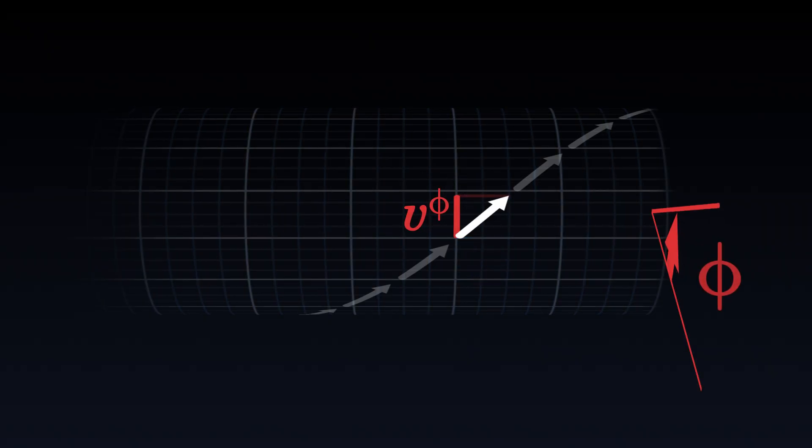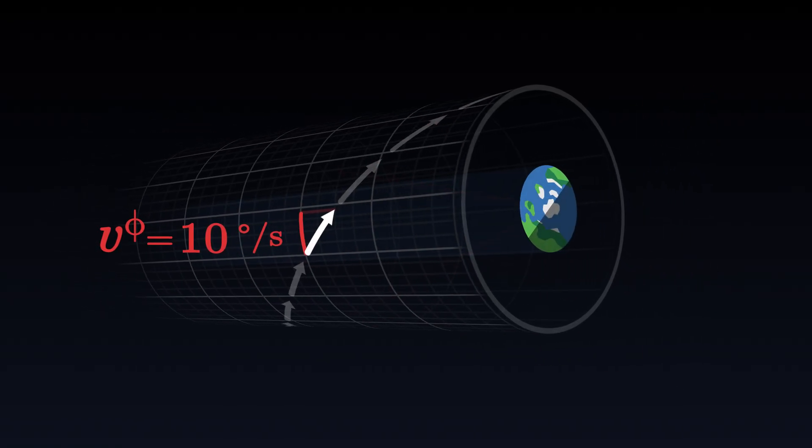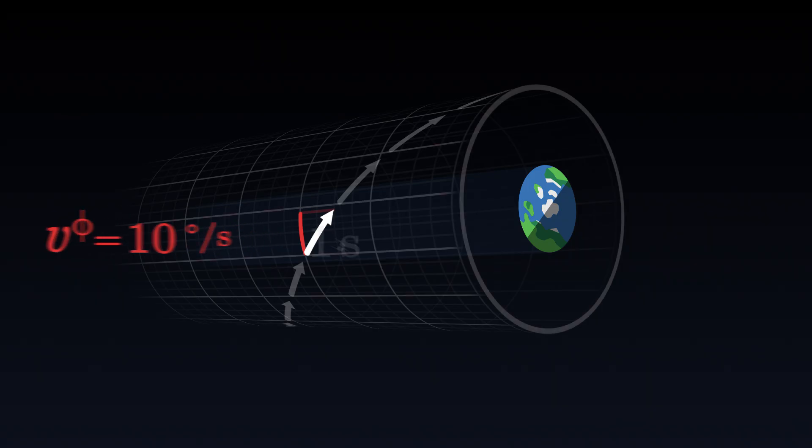The second component represents its angular speed. It is the rate at which the angle formed by the satellite around the Earth increases. If its value is 10 degrees per second, this means that for each second of proper time, the satellite moves 10 degrees around the planet.